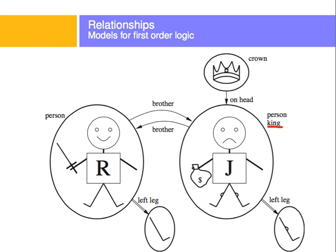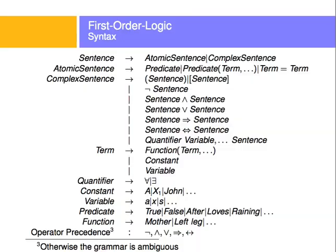For that, we're going to have a syntax — the same logical syntax we've seen before, where we can have things AND other things, things OR other things, things in parentheses, negated things. We can have variables and constants, which are variables that will never change in value. We'll have predicates — true, false, after, loves, reigning, and other relationships. And then we're going to have functions, which represent facts like mother, left leg, etc. We'll also have operator presence.